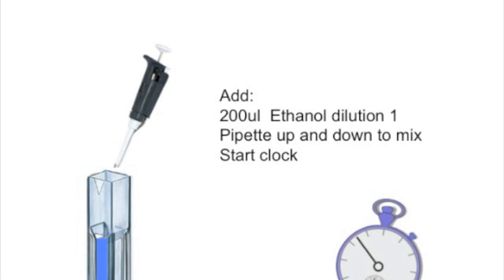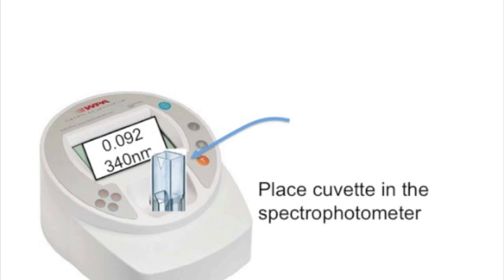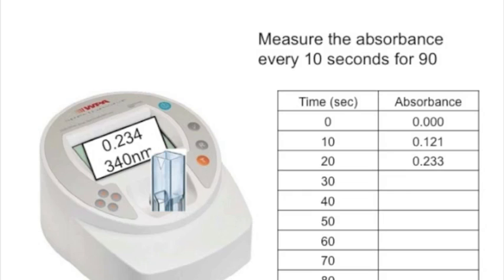Then take out the cuvette, add 200 µl of the ethanol dilution, tap it up and down to mix, and immediately start the clock, because at this point your reaction has started. Put the cuvette back into the spectrophotometer and start reading the absorbance every 10 seconds — you are following the production of NADH as it happens — and carry on for 90 seconds.